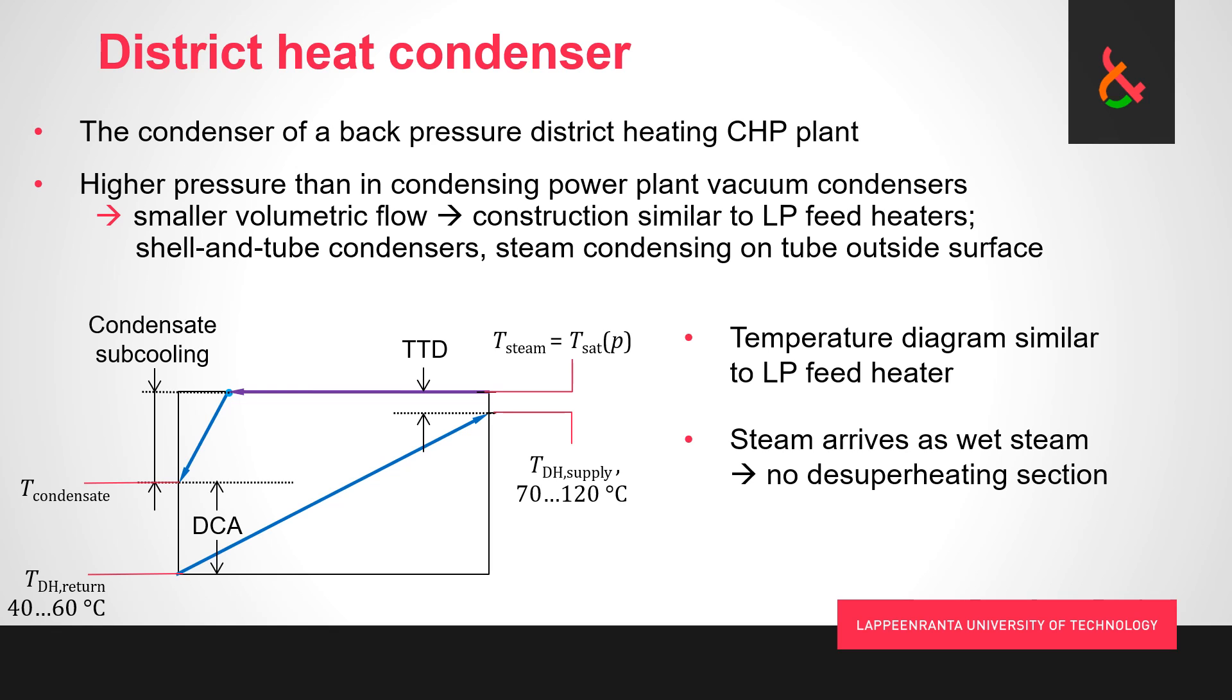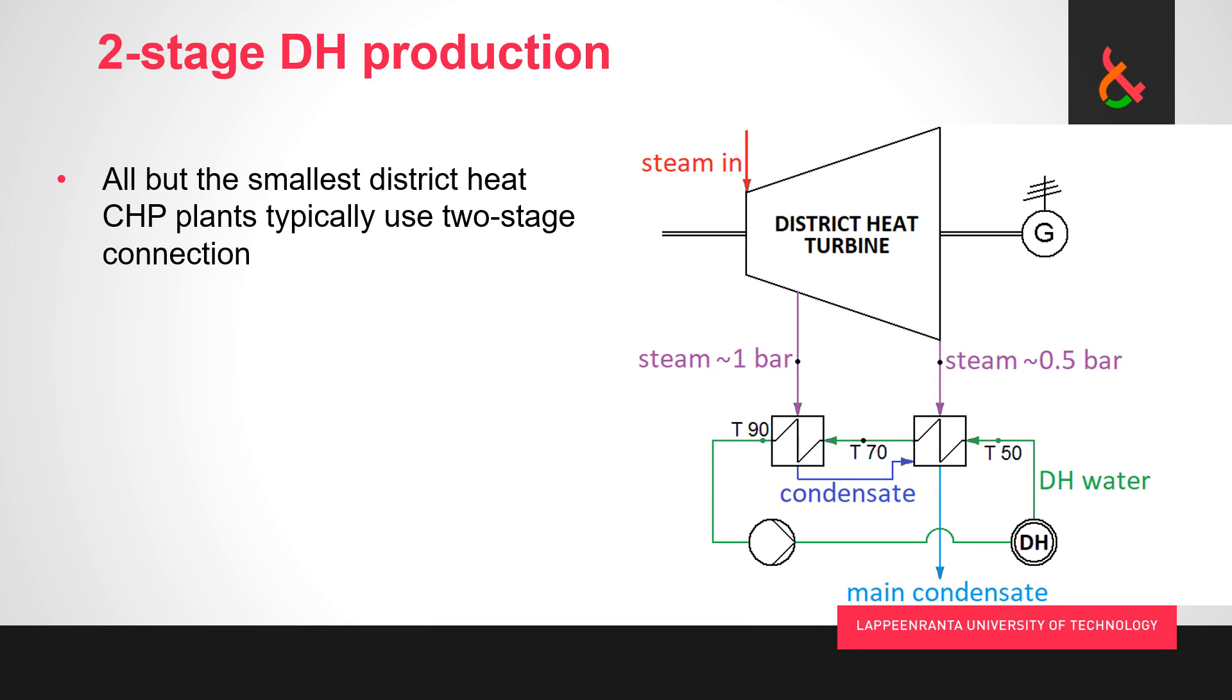Now let's look at two-stage district heating production. Here we have a diagram of how it's implemented. This is something we have almost always implemented in all but the very smallest cogeneration plants producing district heat. The idea is that we have basically two condensers in series. First we heat the water halfway, and only then we take extraction steam and heat it all the way up.